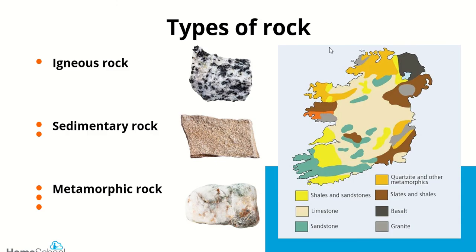I just want to draw your attention to the map of Ireland over here. That map is color coded and the colors tell you where various rocks can be found. As we can see, the most common rock in Ireland is limestone. You can also see some basalt up towards the Giant's Causeway. We're going to look at how rocks got there and why certain rock types are found in those parts of Ireland.